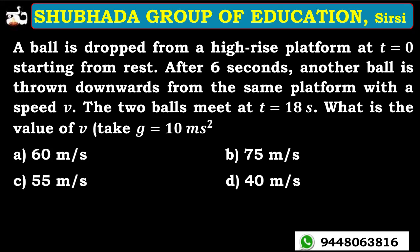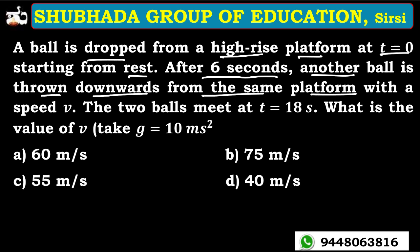Hello, my dear learners, I welcome you all to this session. In this session I will be continuing the discussion on motion in a straight line. This is the last part of this chapter — Part 6. Look at the next problem: a ball is dropped from a high-rise platform at t equal to 0, starting from rest. After 6 seconds, another ball is thrown downwards from the same platform with speed V. The two balls meet at t equal to 18 seconds. What is the value of V?